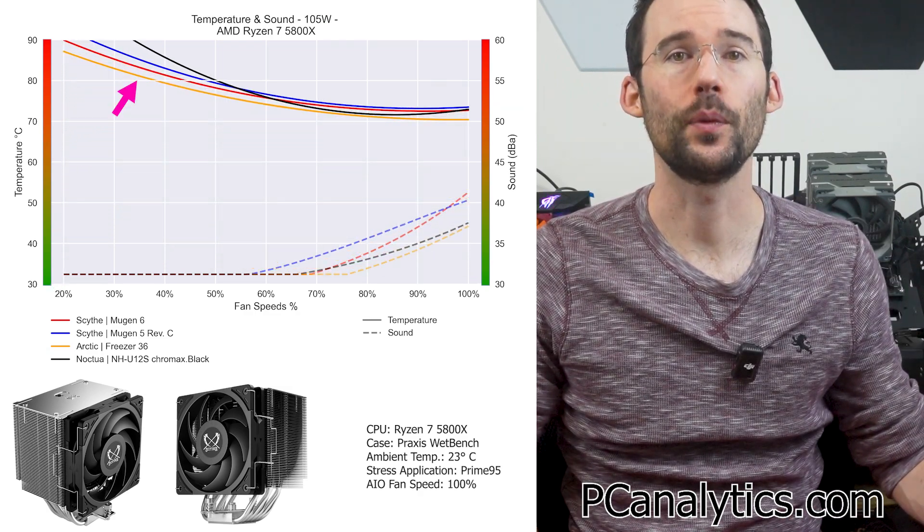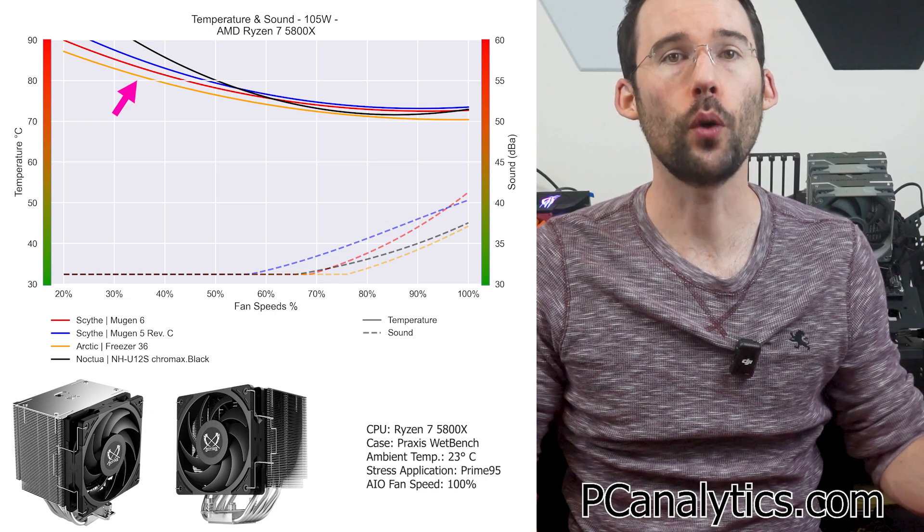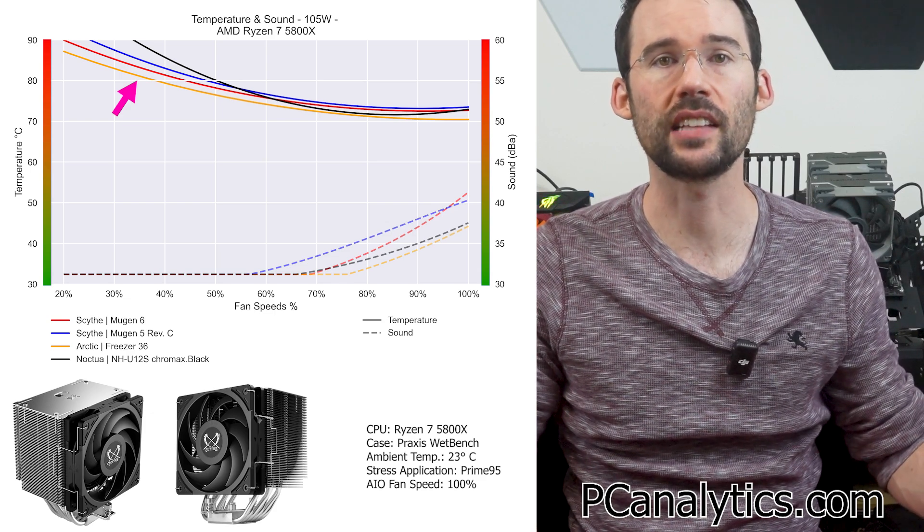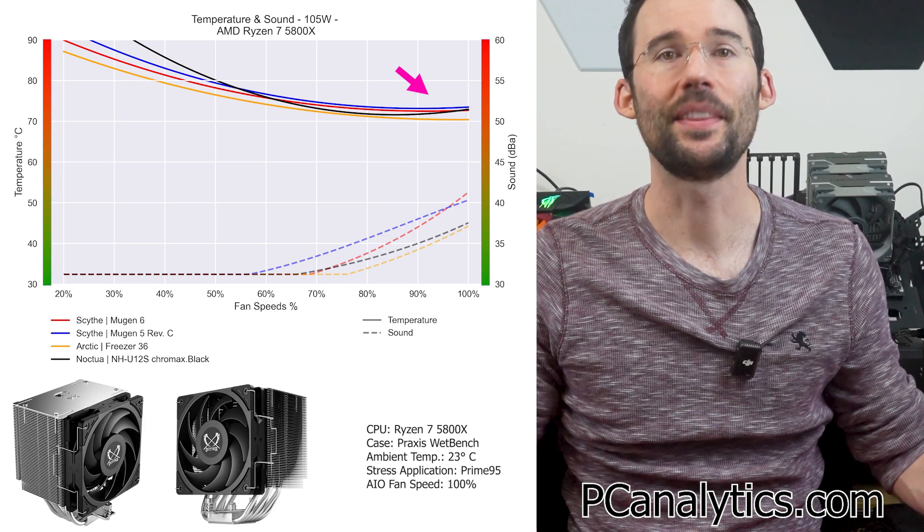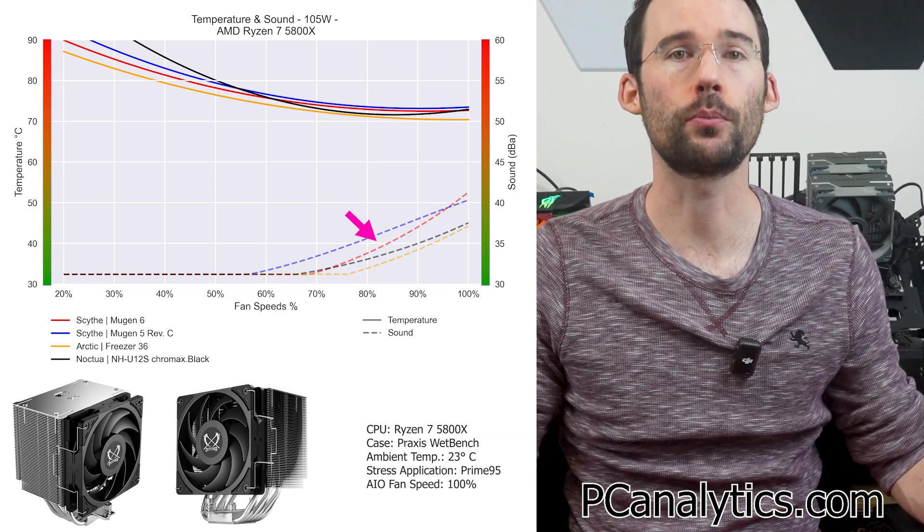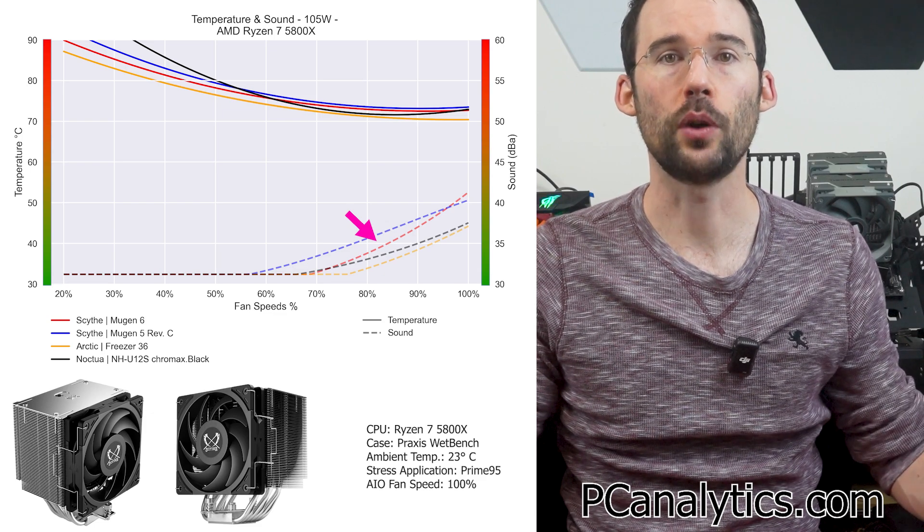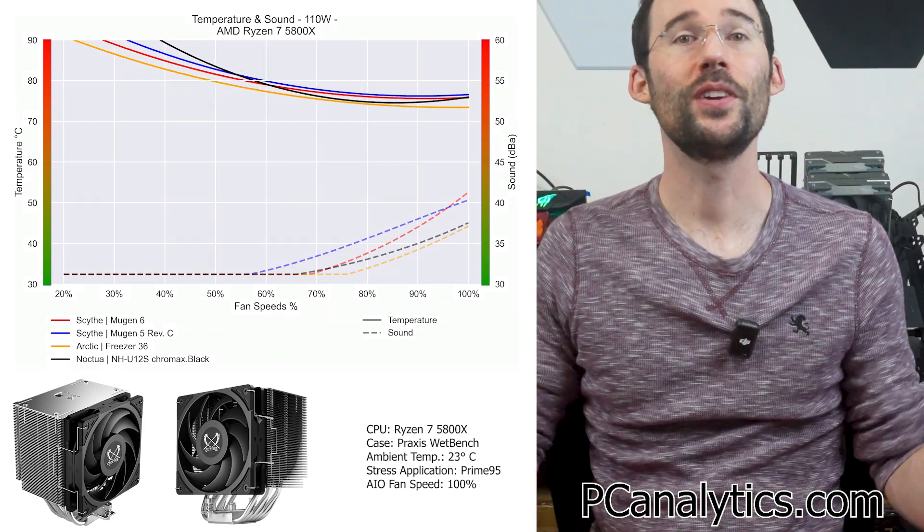As we increase the watts to 105, we can see that the Mugen 6 provides a slight improvement over the Mugen 5 across the board, with only the Arctic Freezer 36 providing slightly better cooling at the lower RPMs, but this advantage lessens at the higher RPMs. Additionally, the Mugen 6 shows noise improvement over the Mugen 5, but is moderately louder than the Freezer 36 and the U12S at the higher RPMs.